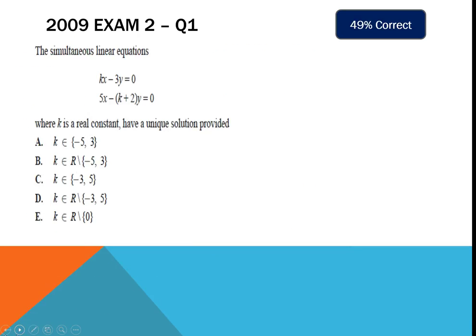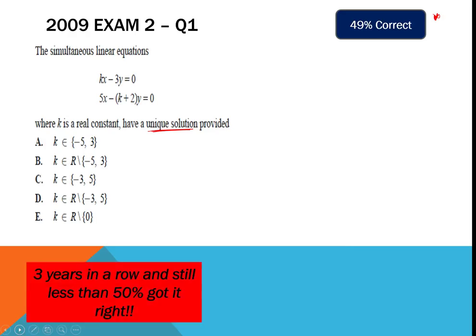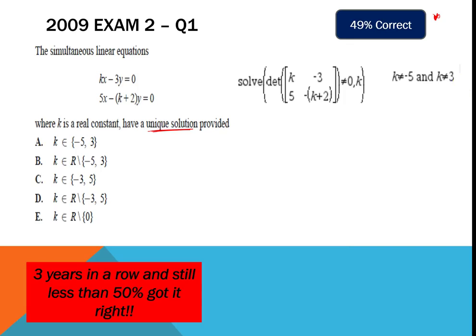In 2009 — three years in a row — they asked a determinant question, and still only 49% got it correct. With around 22,000 students doing Maths Methods, that means about 11,000 students getting it wrong. Solve the determinant when it's not equal to zero; the answer gives negative 5 and 3, meaning M can be anything except those two values. The correct response is B.